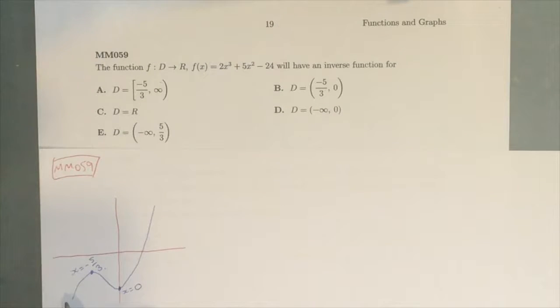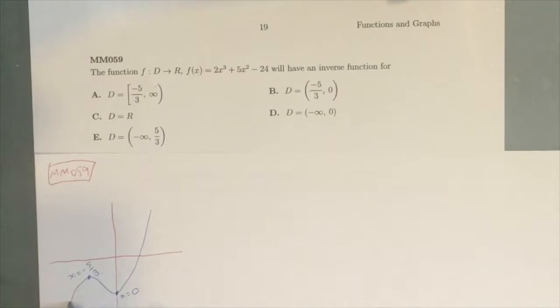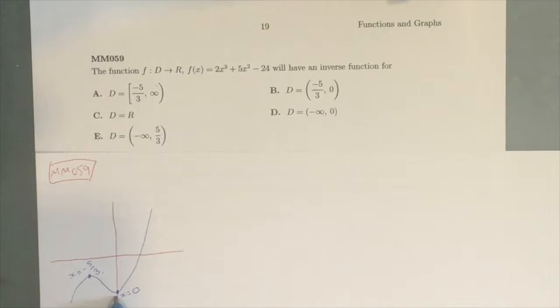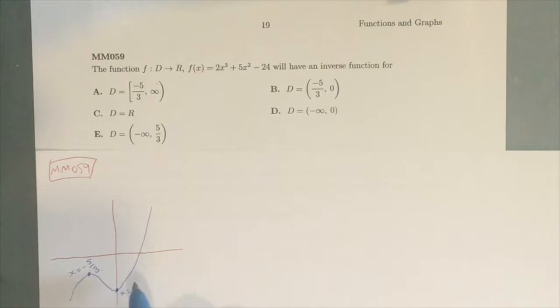So from negative infinity to -5/3, this is all one-to-one, which means that it would have an inverse. From -5/3 to 0, this would also be a one-to-one function. And from 0 to infinity would also be a one-to-one function.